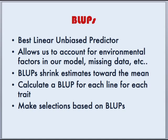BLUPs are Best Linear Unbiased Predictors. They allow us to account for environmental factors in our model as well as missing data. They shrink estimates back towards the mean, and so what we can do is calculate a BLUP for each line for each trait and then make selections based on our BLUPs.